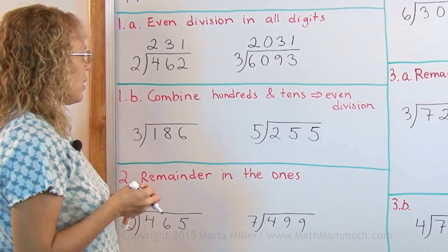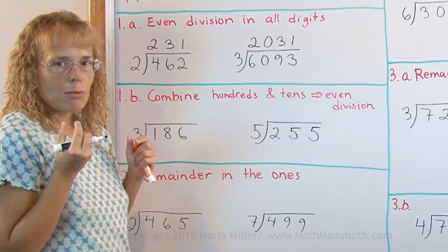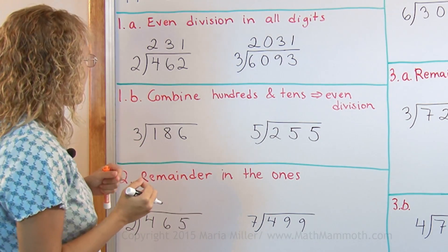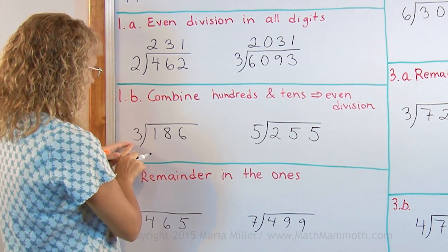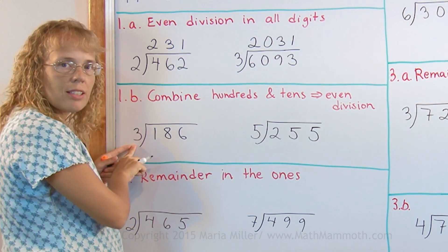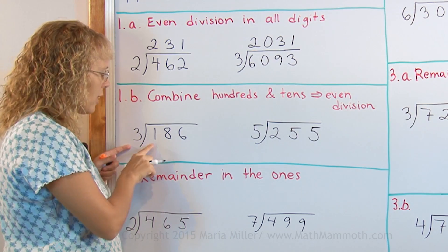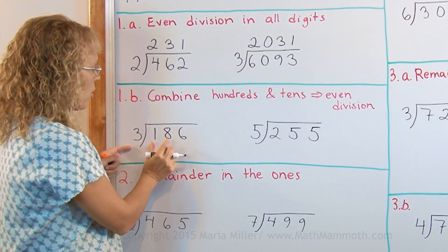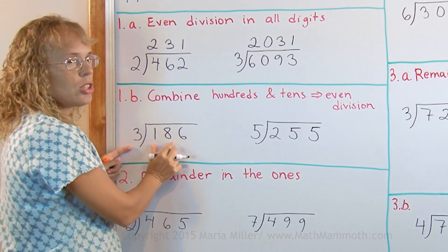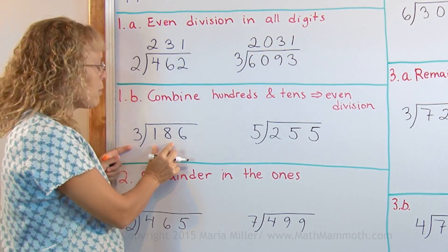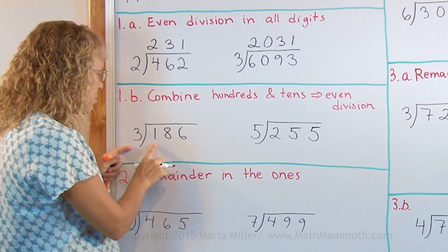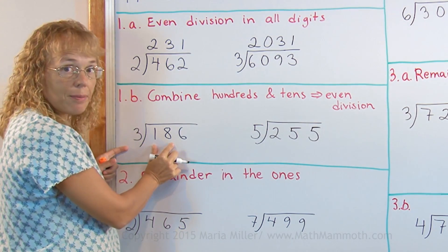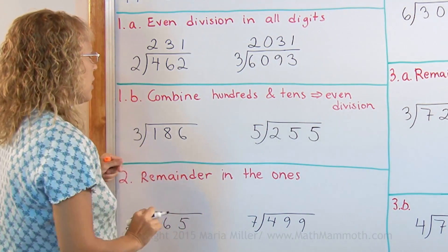In the next step, we add just one small difference: our divisor does not evenly go into the first digit, but will evenly go into the first two digits. For example, 3 doesn't go into 1, but 3 goes into 18.